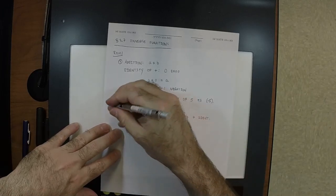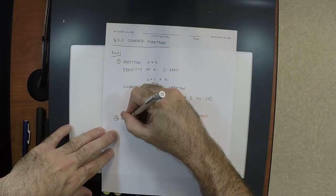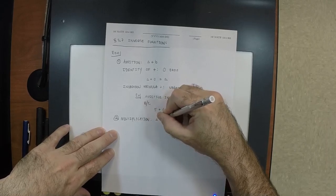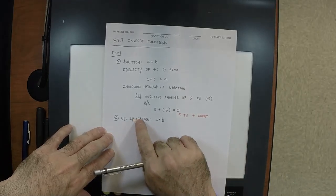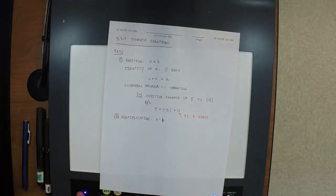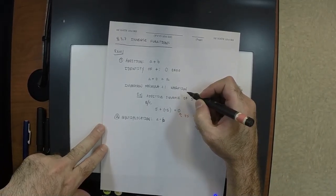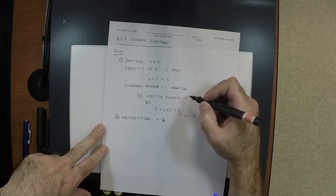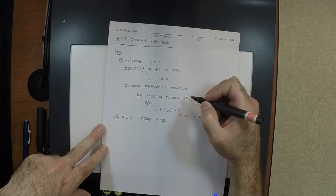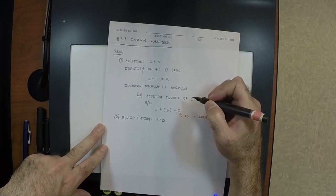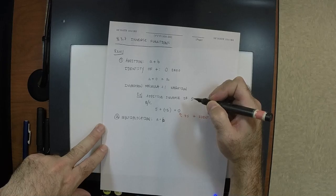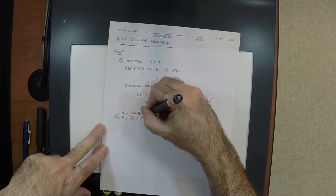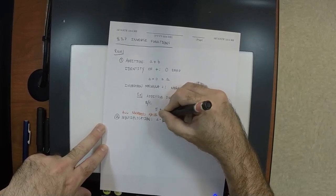Then we have multiplication — a product b. What numbers have an additive inverse? All numbers — zero is its own inverse, because zero plus zero is zero. So all numbers have an additive inverse. What is the identity of product? What number is such that when you multiply any number by the identity, you get the same number? One. Because multiplying by one is the same as doing nothing — that's why it's called the identity.